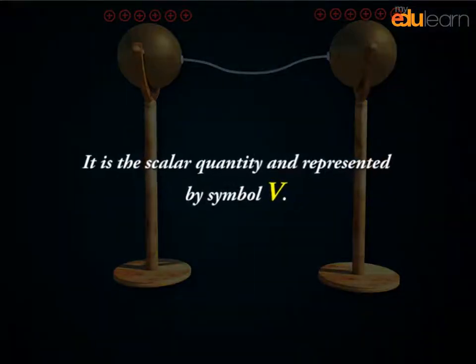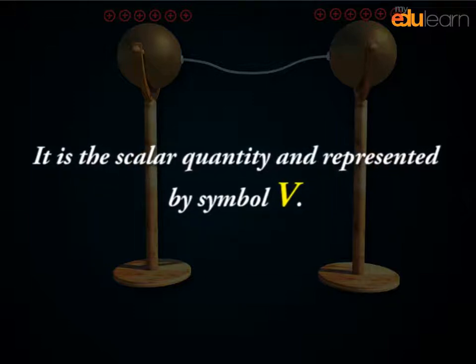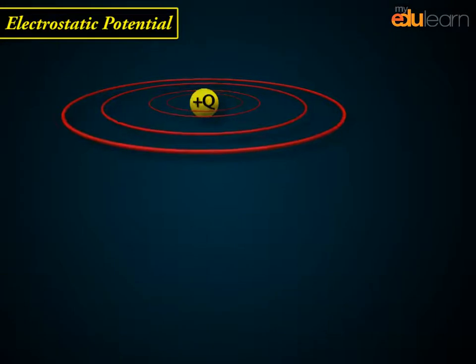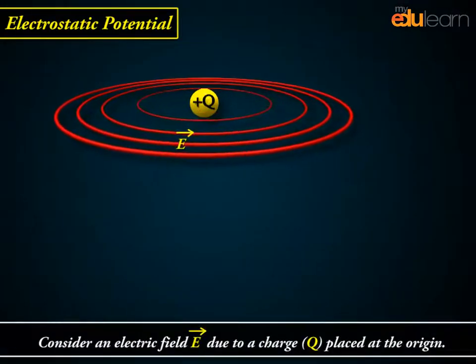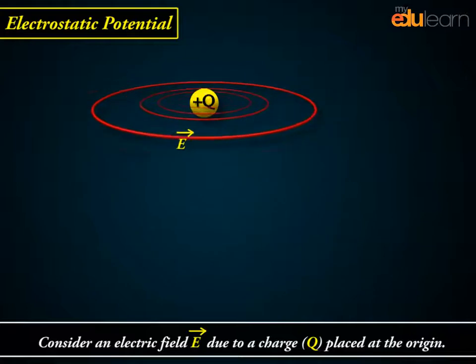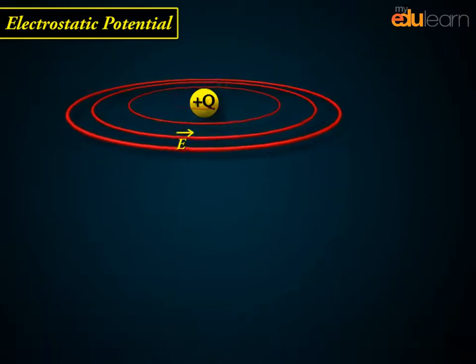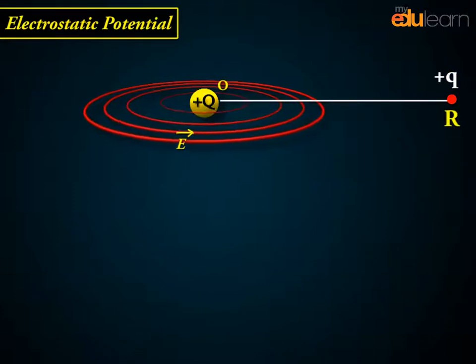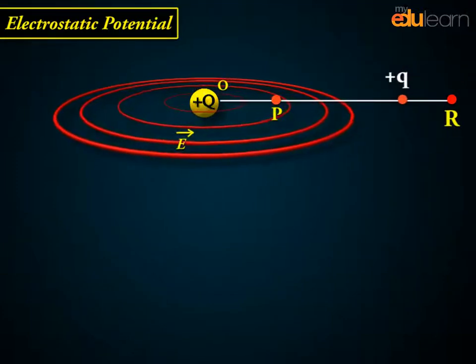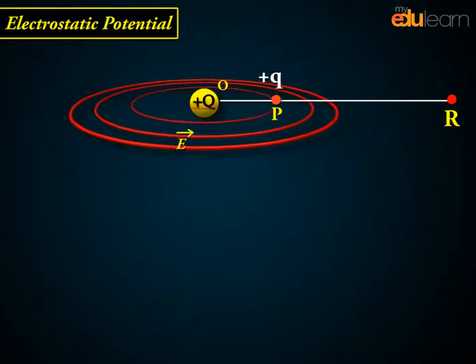It is a scalar quantity and is represented by the symbol V. Consider an electric field E-vector due to a charge Q placed at the origin. Imagine that we bring a test charge q from a point R to a point P against the repulsive force on it due to the charge Q.